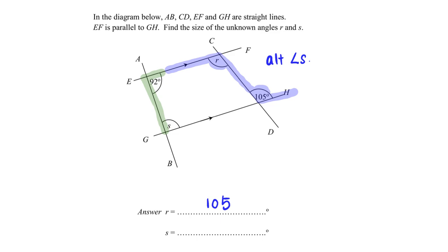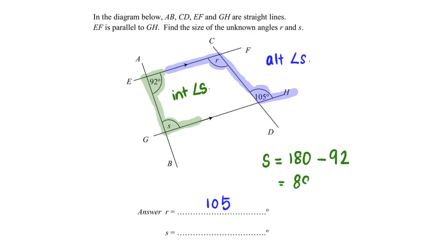Next, since this is the parallel line, S and 92 degrees are actually interior angles, and interior angles add up to 180. So I will be able to get that S is equal to 88 degrees. We have successfully solved this problem.